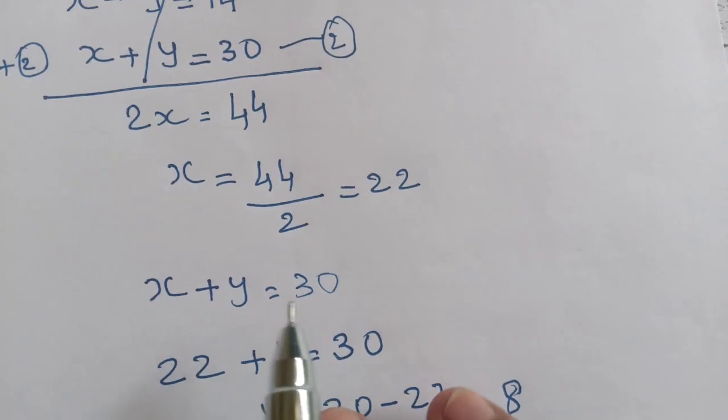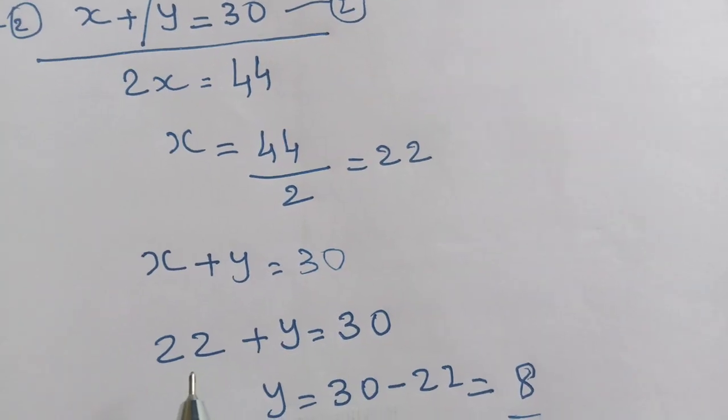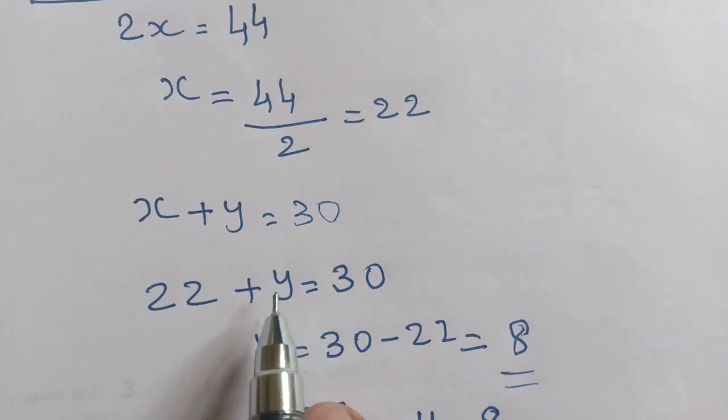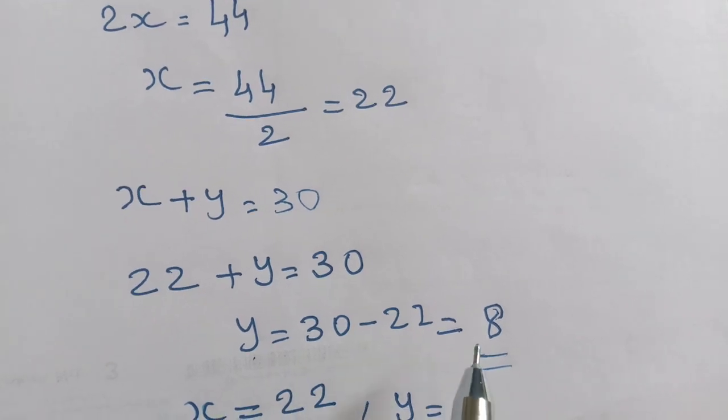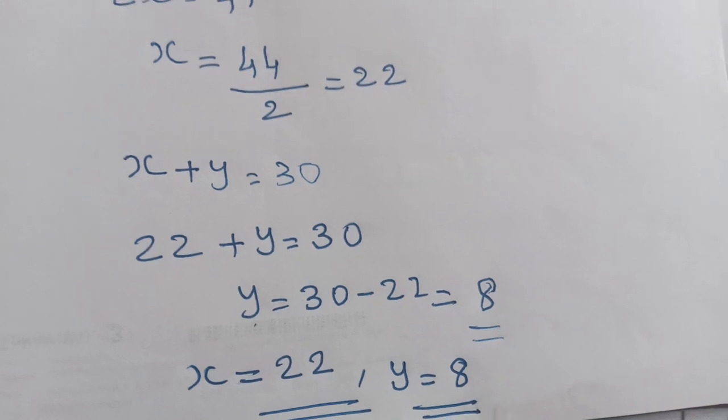x plus y equals 30. x equals 22. Substituting: 22 plus y equals 30. Solving for y: y equals 30 minus 22, which equals 8. Therefore, x equals 22 and y equals 8.